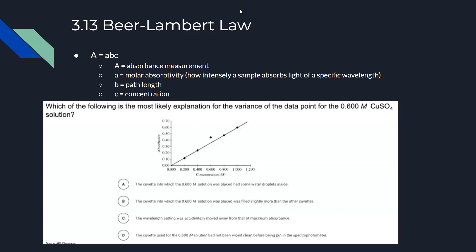Section 3.13 covers the Beer-Lambert law, used in spectrophotometry. The equation is A = abc, where A is absorbance, a (little a) is molar absorptivity — how intensely a sample absorbs light at a specific wavelength — b is path length (typically 1, and can be ignored), and c is concentration in molarity.